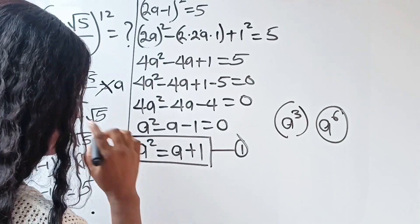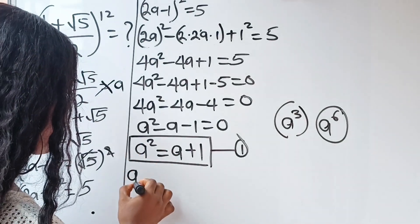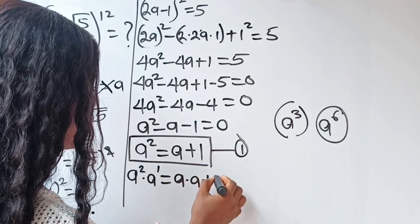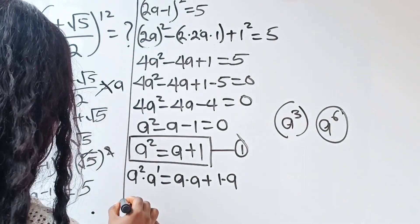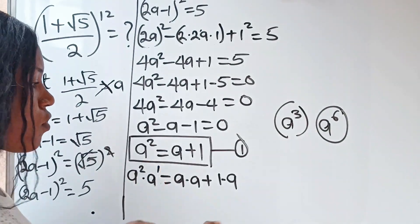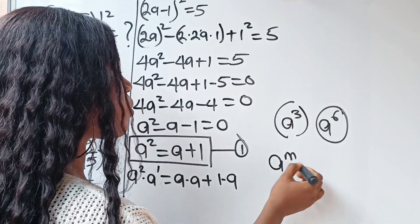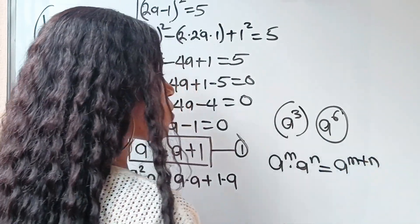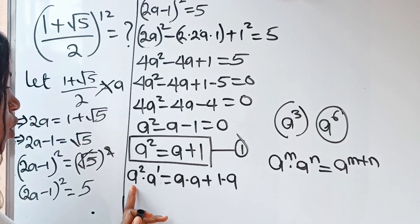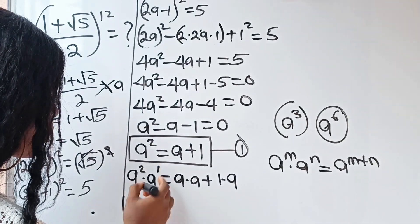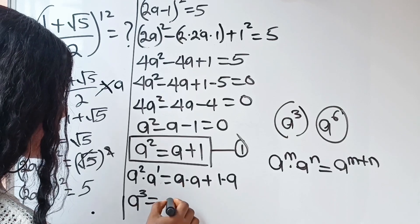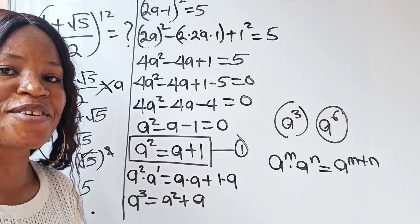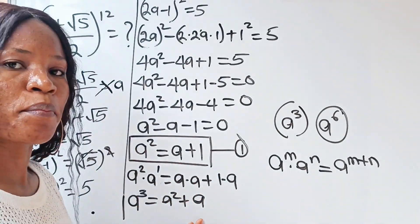If we multiply equation 1 through by a, we get a³ on the left side — because a² × a¹ = a^(2+1) = a³ by the law of exponents. On the right side, a times a is a², and a times 1 is a. So a³ = a² + a. This a² is the golden equation we need.